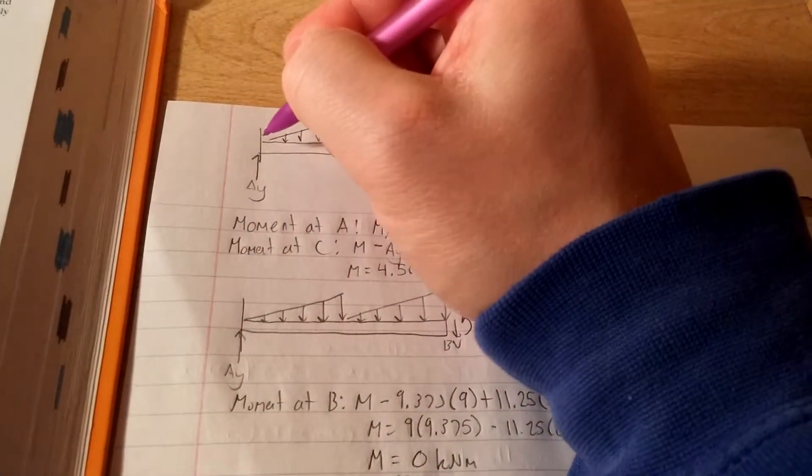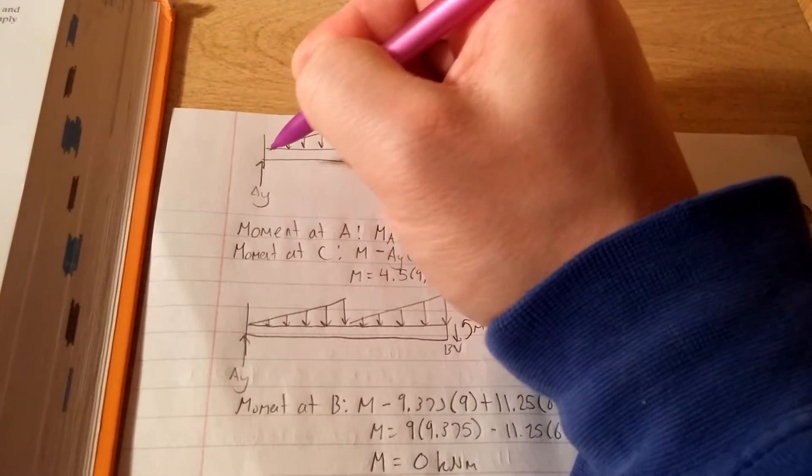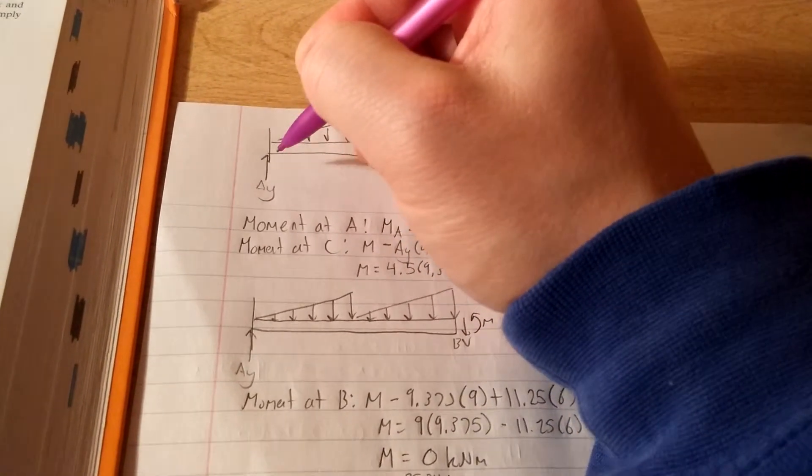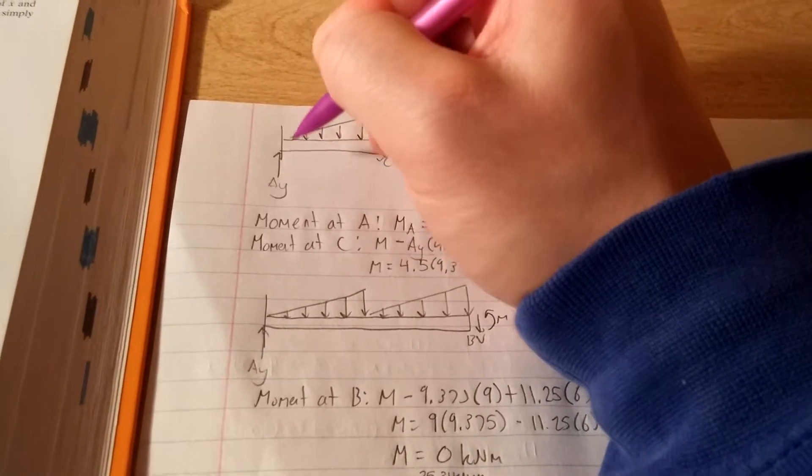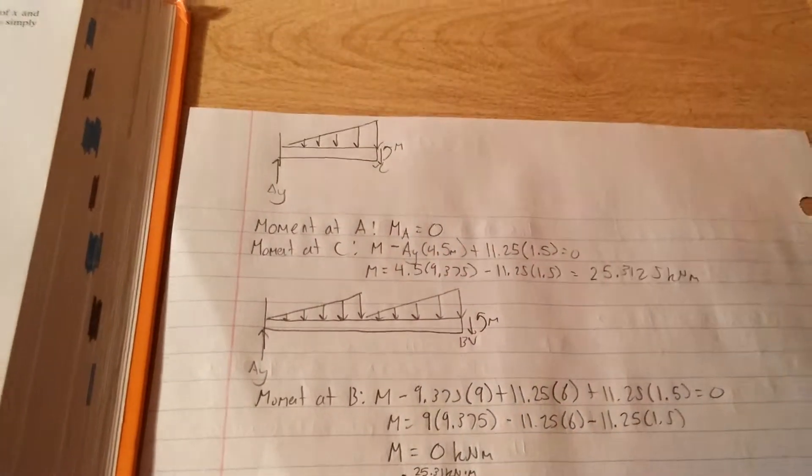there's no moment arm of that. So the moment's going to be zero, because if we're taking the section right at A, there's no moment arm for this force to act. So it's only going to be the result moment from the section. So that's going to be zero.